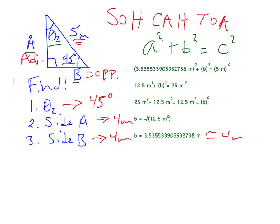The final answer is: theta 2 is 45 degrees, side A is 4 meters, and side B is 4 meters. Thank you for learning with me, and I'll see you next time.